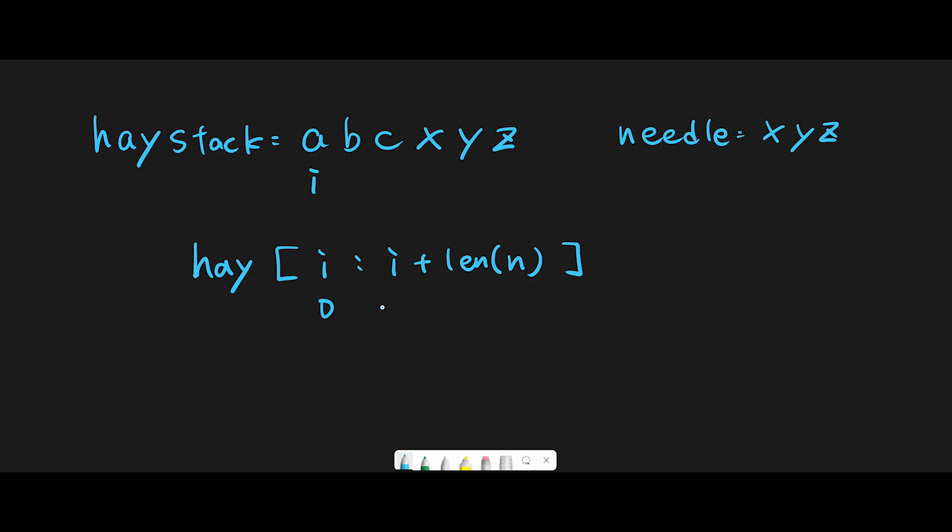In this case we start from index 0 and the endpoint should be 0 plus 3. So from 0 to 3, but in Python this end number is not included, so that means 0 to 3 means indices 0 to 2.